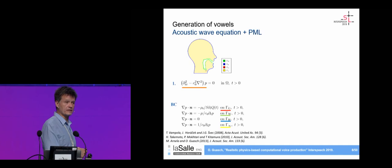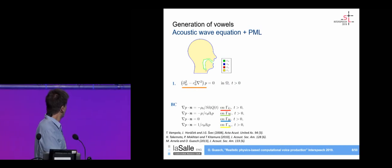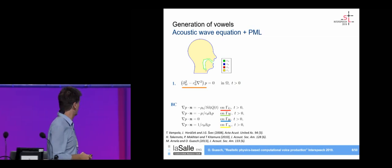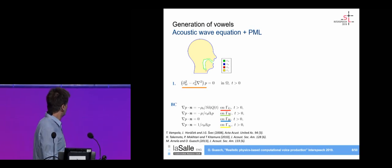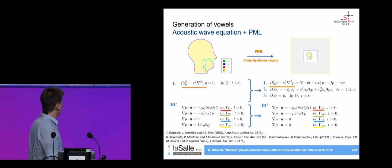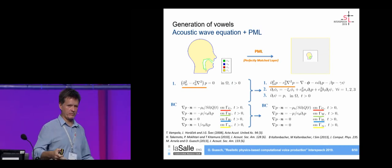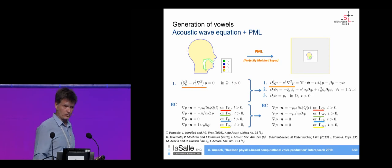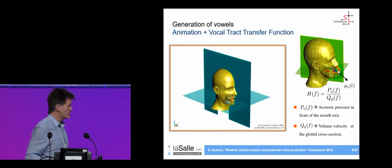To simulate a vowel, we solve the acoustic wave equation, inputting a train of glottal pulses as a boundary condition at the glottis and applying boundary conditions to the rest of the domain. The situation is complicated because the computational domain is finite and we want to represent speaking in an anechoic environment, which makes the equations more complex, but the essential formulation is the wave equation.